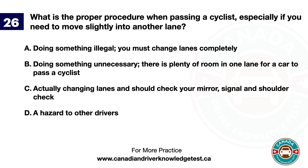Question 26. What is the proper procedure when passing a cyclist, especially if you need to move slightly into another lane? A. Doing something illegal — you must change lanes completely. B. Doing something unnecessary — there is plenty of room in one lane for a car to pass a cyclist. C. Actually changing lanes and should check your mirror, signal and shoulder check. D. A hazard to other drivers. The answer is C. Actually changing lanes and should check your mirror, signal and shoulder check.